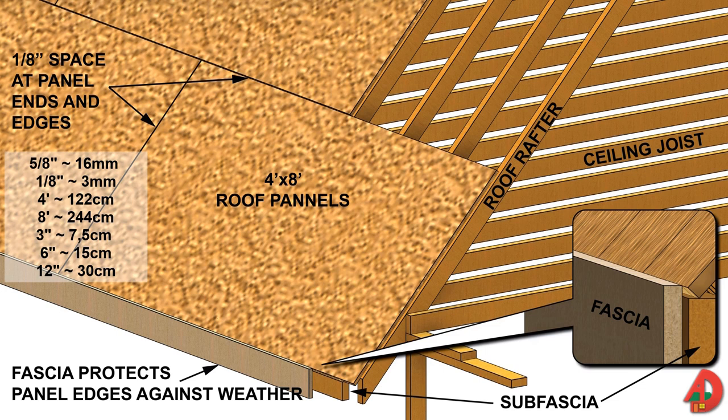In areas where higher wind loads are anticipated, ring-shank or specialized hurricane nails are used and spaced 3 inches on center along the edge and 12 inches on center at intermediate rafters. Number 8 by 1-3/4 inch screws can also be used with the same pattern as the nails.